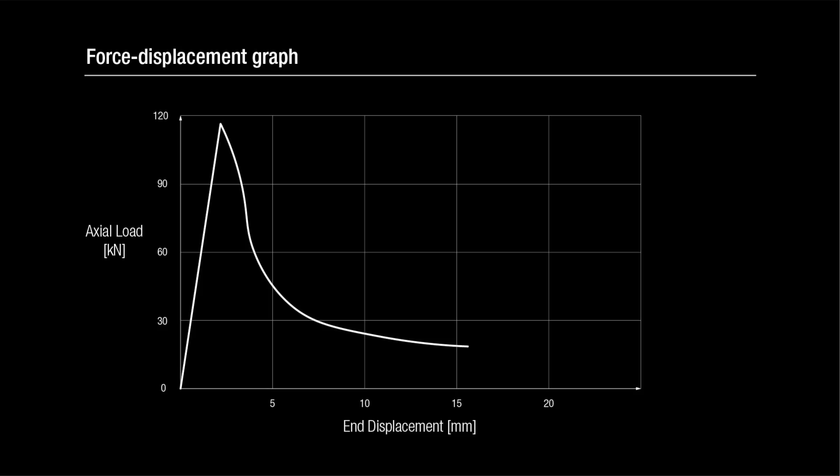The graph initially shows a linear relationship between force and displacement. In this range, no significant displacement has taken place. However, once failure takes hold, the slope begins to reduce rapidly and the point at which the curve becomes flat marks the failure load.